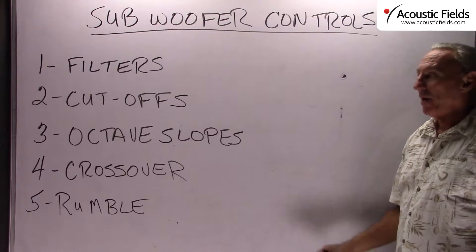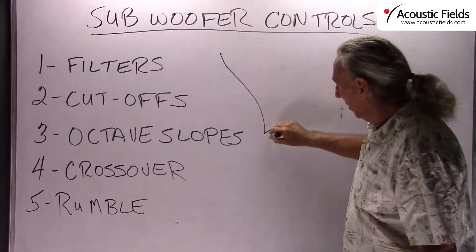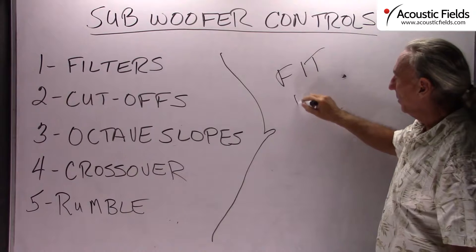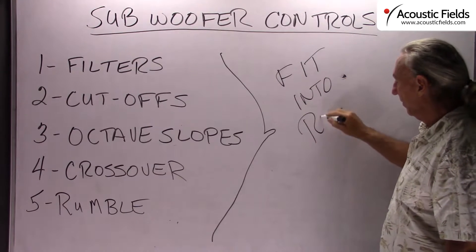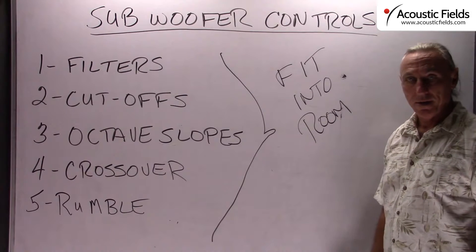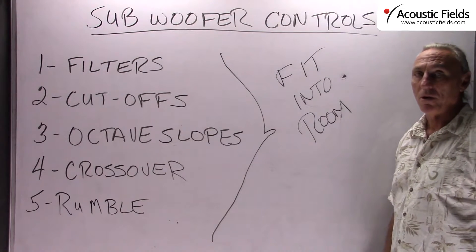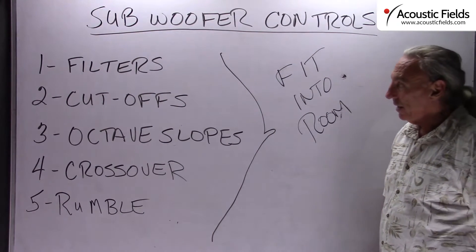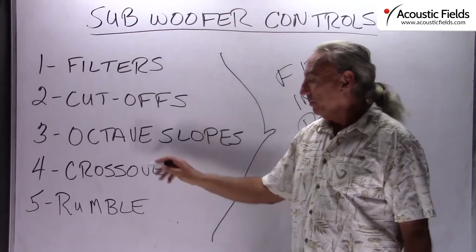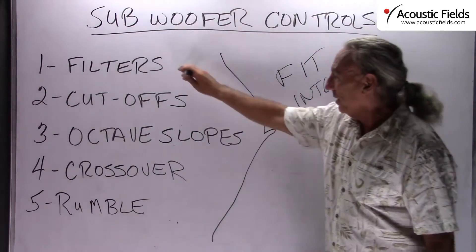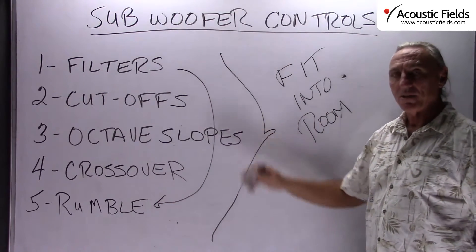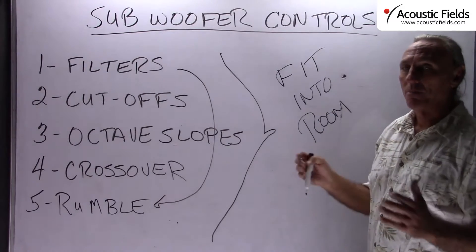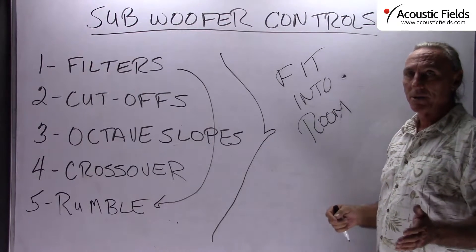Let's step back a little bit and take a deep breath. What are all of these controls for? To help the low frequency energy fit better into your room. Because it doesn't want to fit unless your room is 30, 40, 50 foot long. So it's going to oscillate throughout the room, bang into walls, and build up pressure.